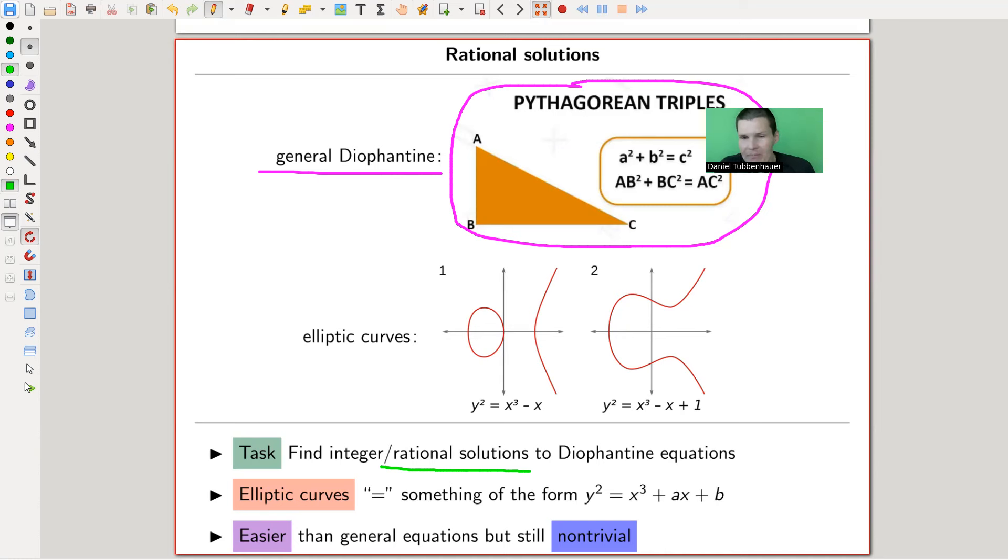The old Egypt or Babylon, they already wanted kind of to solve certain types of equations. And at that point in time, certain types of equations really meant equations which are now called Diophantine equations, something like, well, think about Pythagorean triples. So find solutions to a squared plus b squared equals c squared, and not just any solutions. So complex number solutions are a bit boring in this setting. Let's say we find integer solutions, or for our video today, more rational solutions. Like a really classical question.